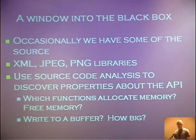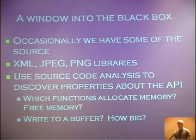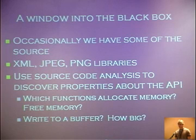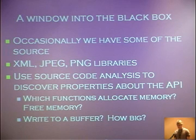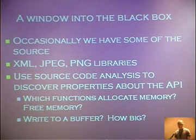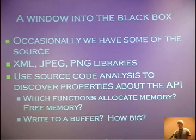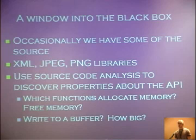Occasionally we have some of the source to a program. If you're thinking about a web browser, it's probably using XML, JPEG, or PNG libraries which are open source. A lot of commercial software, which you only have the binary for, is built upon stuff you may be able to find the source for. If you have the source, you can analyze it to discover properties about the API — which functions allocate memory, which functions free memory, which functions write to a buffer, how big the buffer is, whether they take a length argument — and use all this information to reduce the amount of binary code the reverse engineer has to examine.